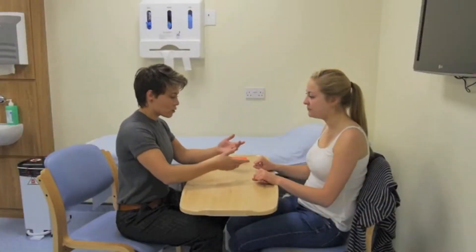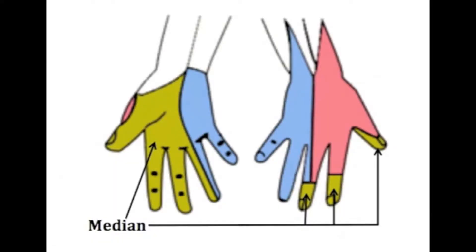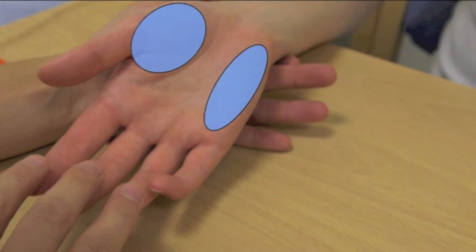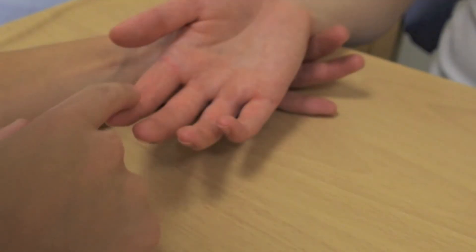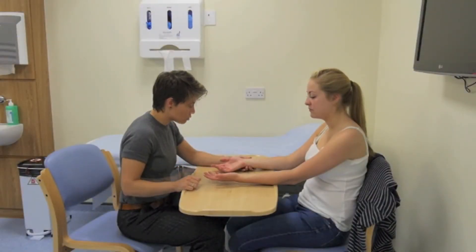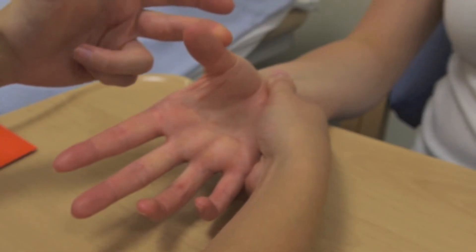Complete the examination by examining the median nerve. In carpal tunnel syndrome, the median nerve is compressed as it passes through the carpal tunnel at the level of the wrist. This condition presents with symptoms such as pain or altered sensation in the distribution of the median nerve, or denervation of the muscles supplied by the median nerve. Firstly, inspect the thenar and hypothenar muscle bulks looking for wasting. Test sensation at the tip of the index finger, which can be compared to the contralateral side. Test motor power by assessing the abductor pollicis brevis muscle: with the palm facing up, ask the patient to point their thumb up and resist you whilst you exert a downward force.